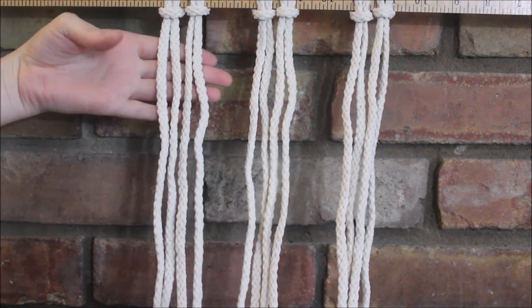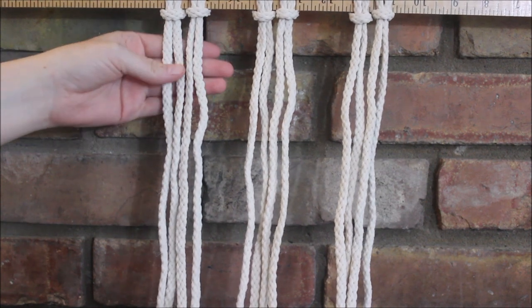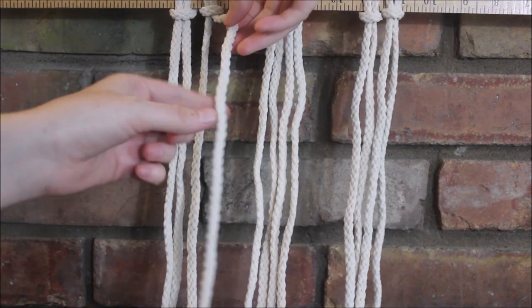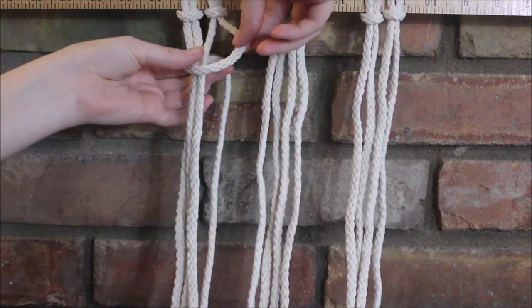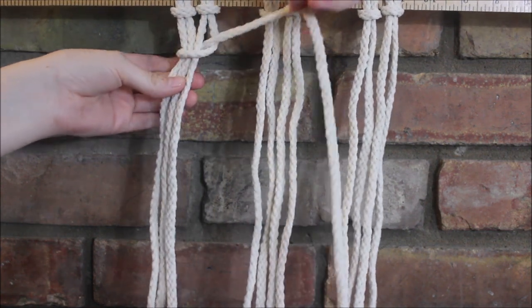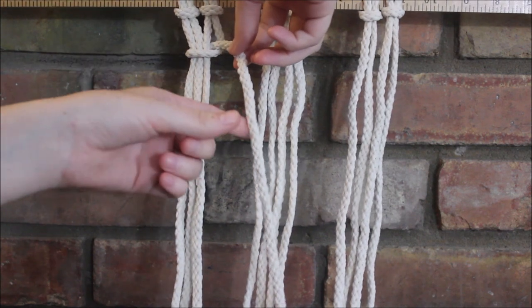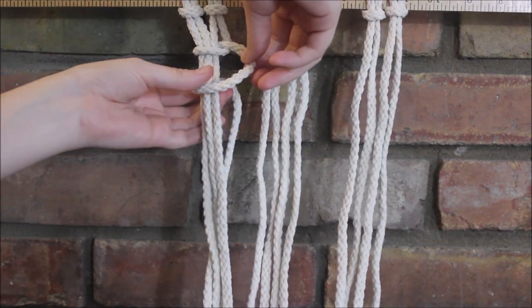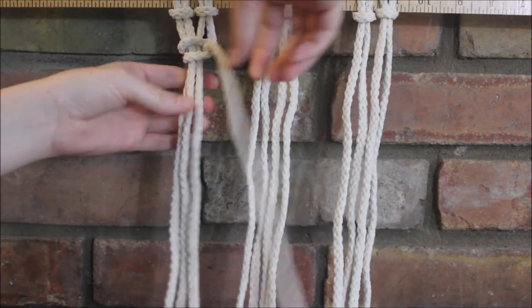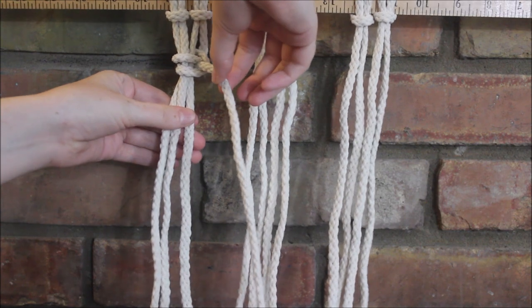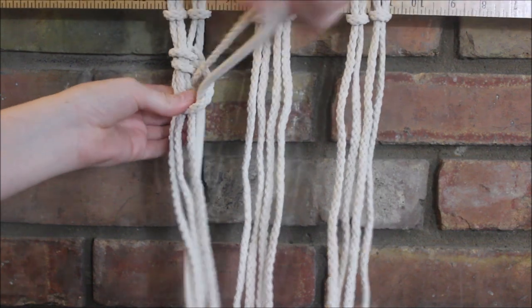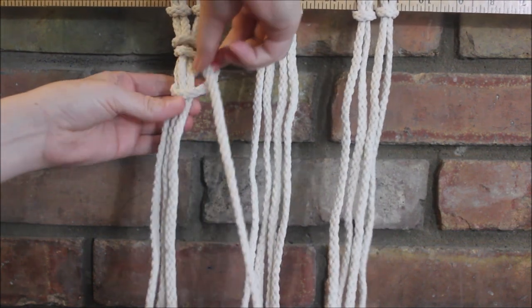To begin, we're going to take the four strands here on the left and take the one on the right in this group and it's going to wrap around all three strings and then go through the little loop. We're just going to pull on that gently and then repeat that again so it wraps around the three strings and through the loop. Gently pull on that and then we're going to do it one more time. So it wraps around and through and gently pull that tight.